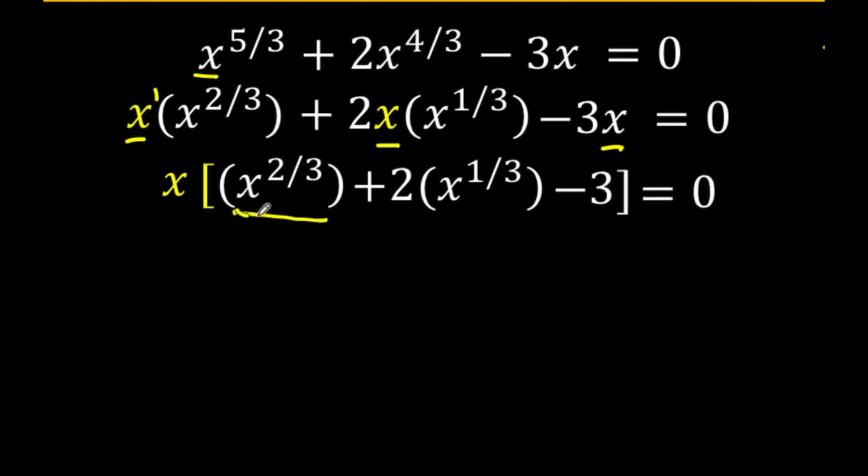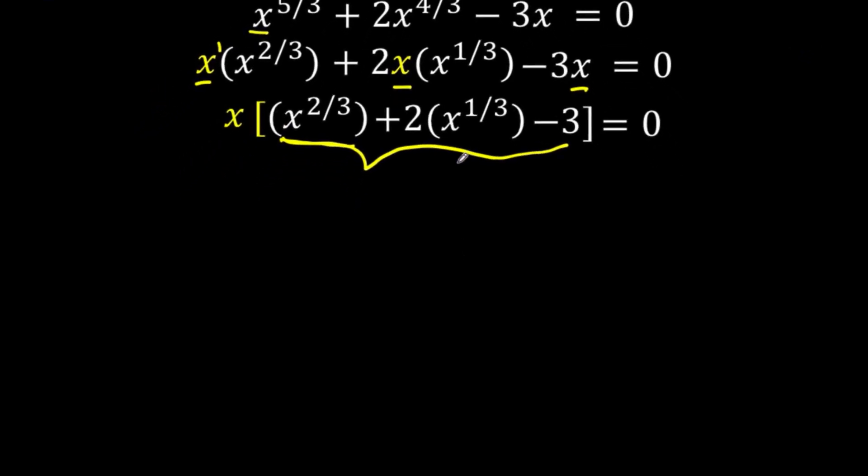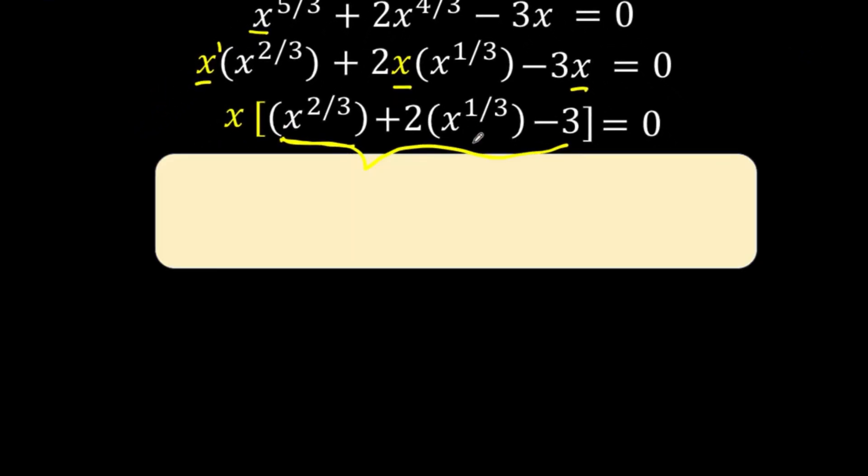This resulting part here is quadratic in form because if this were 2 instead of 2 thirds and this were 1 instead of 1 third, then you have a quadratic equation in the form a squared plus 2a minus 3 equals 0. So let's do the necessary substitution. We look at the literal coefficient of the middle term, that is x raised to 1 third, and let that equal a variable.